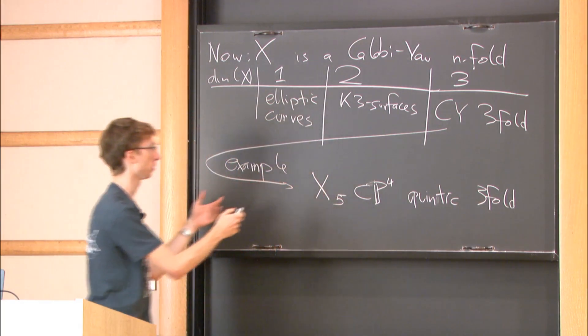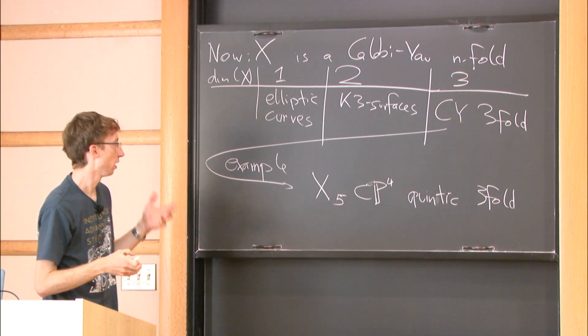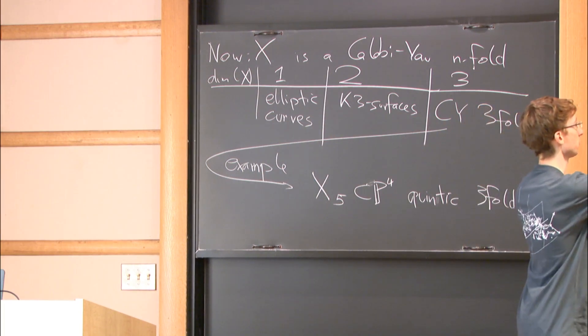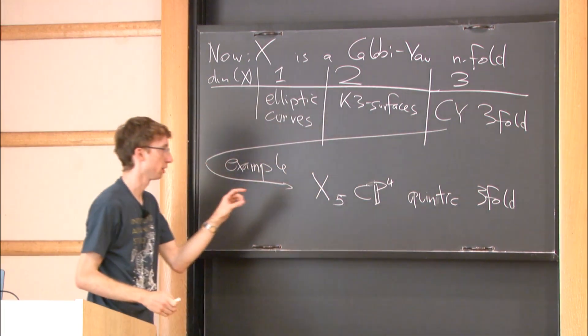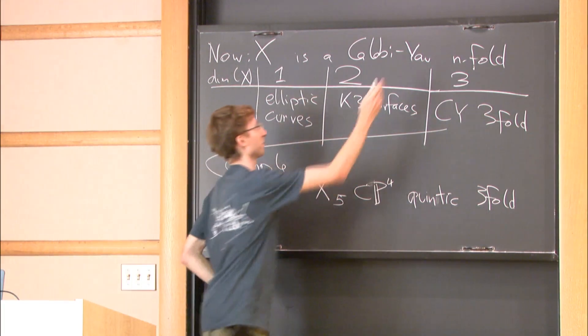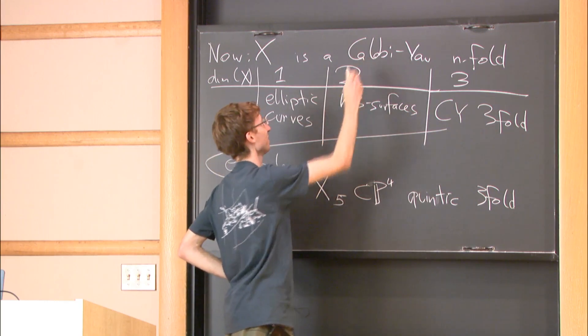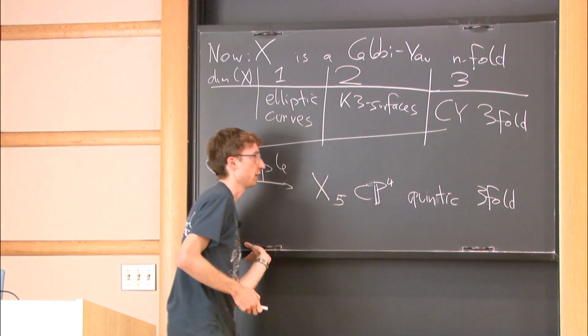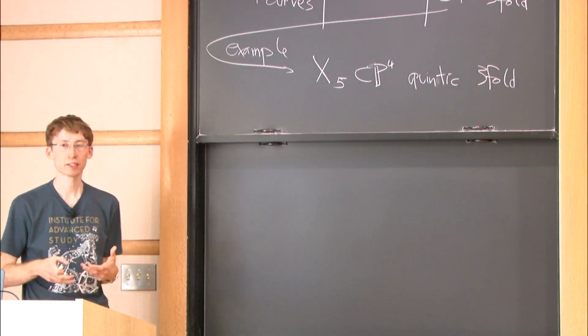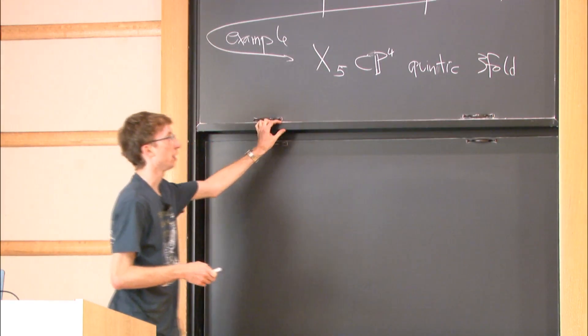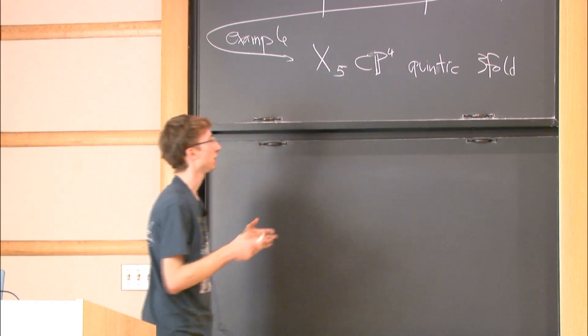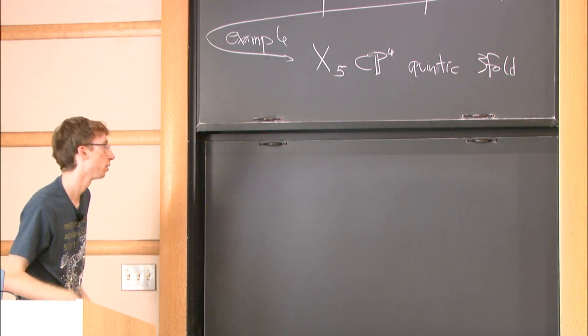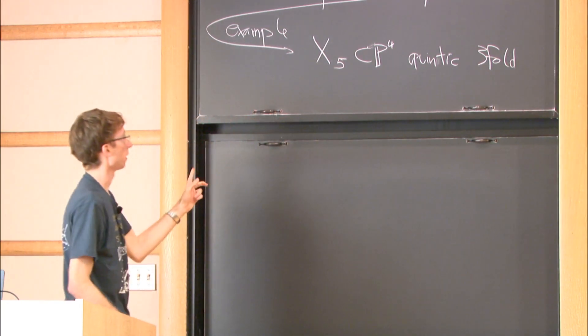Calabi-Yau threefolds are important for many reasons. One is that there are many different kinds of curves on Calabi-Yau threefolds. They appeared in Yau's solution to Calabi's conjecture. They also appear in string theory, where physicists conjecture that our world should have six extra dimensions to describe our world. To get a consistent theory, these six extra dimensions should look like a Calabi-Yau threefold, which is a real six-manifold.